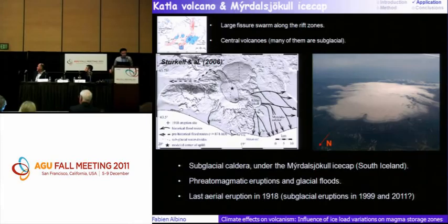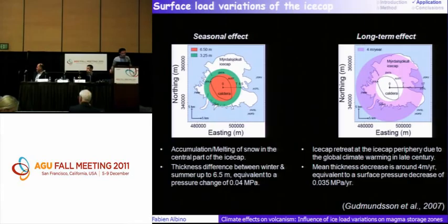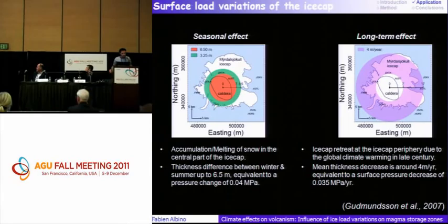One of the applications was the Katla volcano, situated in South Iceland under the Mýrdalsjökull ice cap. Katla volcano is a subglacial caldera — we have a lot of phreatomagmatic eruptions and glacial floods, and the last eruption was in 1918. We chose this volcano because we have very strong surface change for the Mýrdalsjökull ice cap, with two different types of surface change according to time scale.